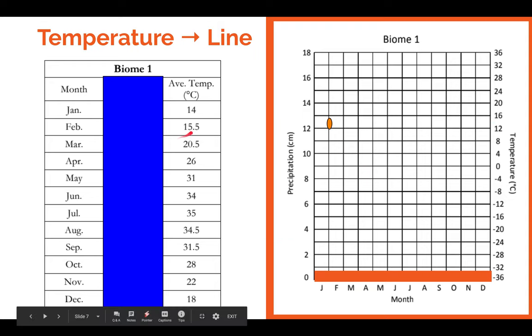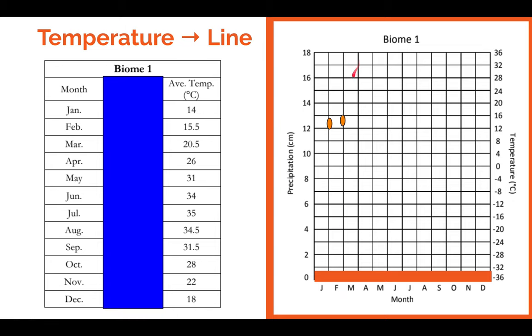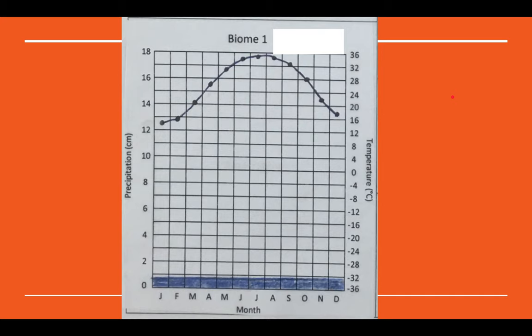February, it's about 15 and a half. Place our data at 15 and a half. You're going to continue to do that throughout the year. You're going to connect those dots. And then as a result, this will be your climograph for biome one.